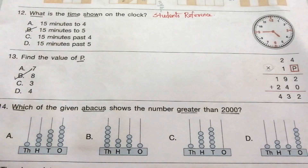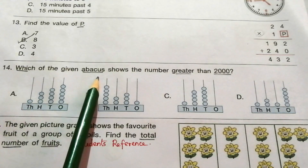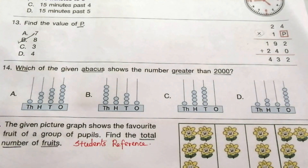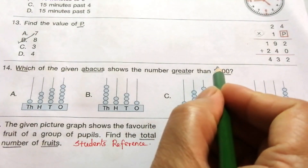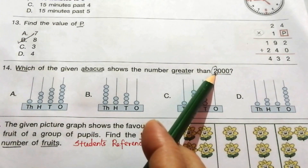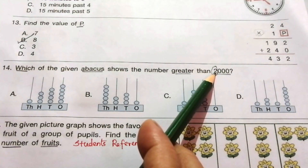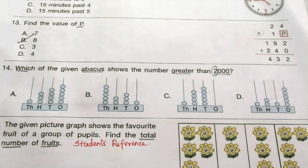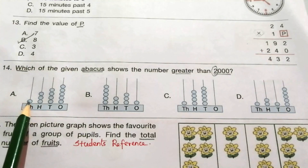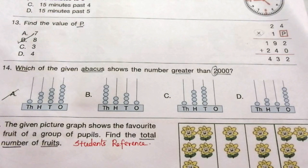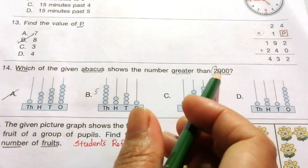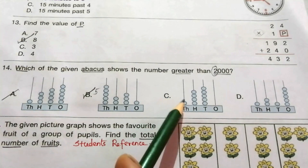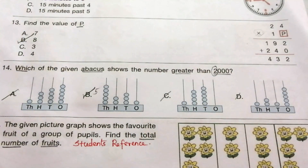Question 14: Which of the given abacuses shows a number greater than 2000? We check the thousands place only. Option A has thousands digit 1, less than 2 — wrong. Option B has thousands digit 5, which is greater than 2 — correct. Options C and D have thousands digit 1 — wrong. Our answer is B.